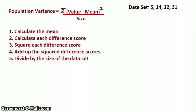Let's say our data set is a 5, a 14, a 22, and a 31, so the size of the data set is four. We're asked to calculate the population variance as a way to get an idea of how much spread, how much variability, there exists in these four values. So to calculate the population variance, step one is to calculate the mean.